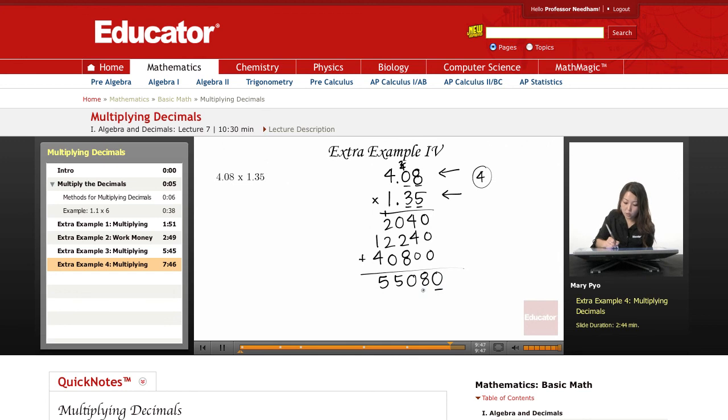So, one, two, three, four, there's four numbers, I place the decimal point right there. Since there's four numbers behind decimal points here, there has to be four numbers behind the decimal point in the answer. It's going to be 5.5080.